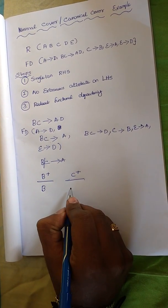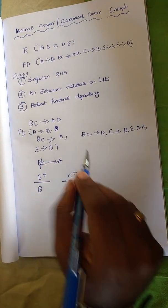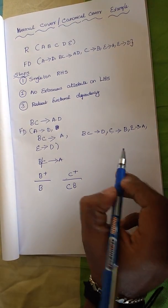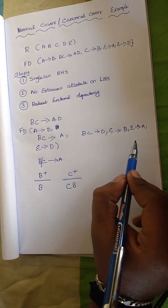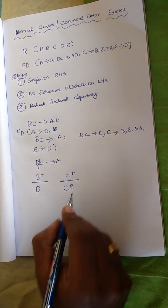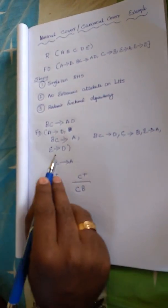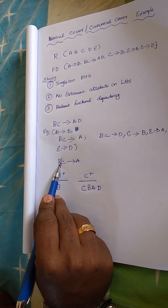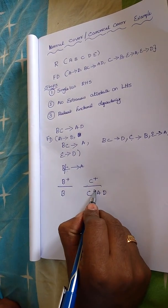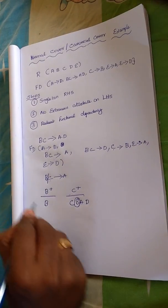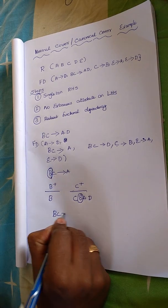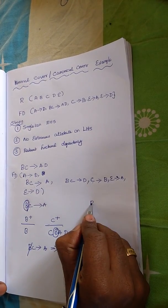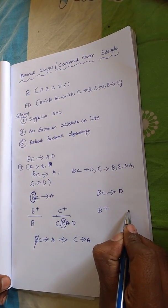Next, C closure: by reflexivity C closure gives C. Scanning, C determines B. Then BC together determines A, and BC together determines D. So from C closure we are able to derive B. Since B closure determines nothing extra but C closure can derive B, we can eliminate B from BC determines A — changing it to C determines A. Similarly for BC determines D: C closure gives C, then C determines B, then BC determines D and BC determines A. Again C closure can derive B, so we eliminate B.